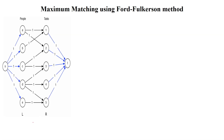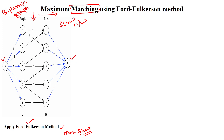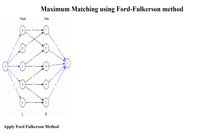Now we apply the Ford-Fulkerson algorithm to this graph. This structure is now a flow network. The first task — transforming the bipartite graph into a flow network — is done. Next, we apply Ford-Fulkerson to identify the max flow, where flow corresponds to matching. We identify paths from source to destination sink through vertices from the two subsets.